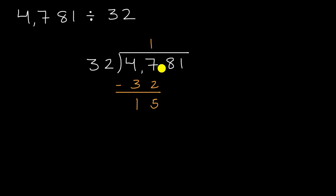But then our next step is we bring down the eight. And we say, how many times does 32 go into 158? Now this is a little bit tricky. If you were estimating how many times does 30 go into 150, you might say five. And actually, this is for kicks. Let's just try that out. Let's see if five works.